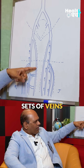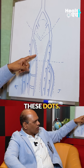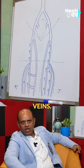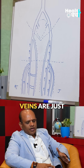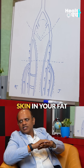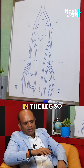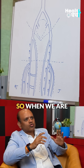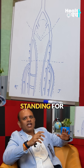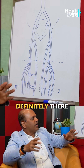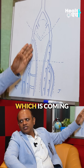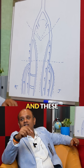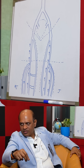The other set of veins which I have drawn with these dots are called superficial veins. What I mean by that is these veins are just below your skin in the fat of the leg. So they don't have any support of muscles. So when we are standing for a longer time, there is more and more pressure coming on the vein which causes dilatation of the veins, and these are the varicose veins.